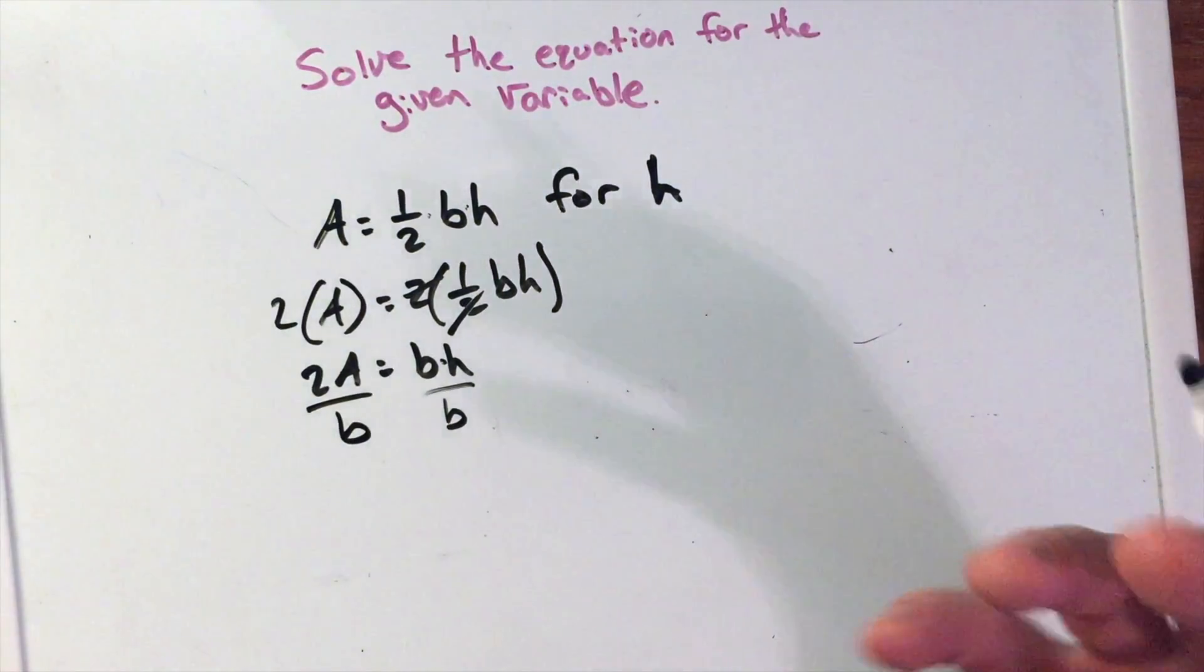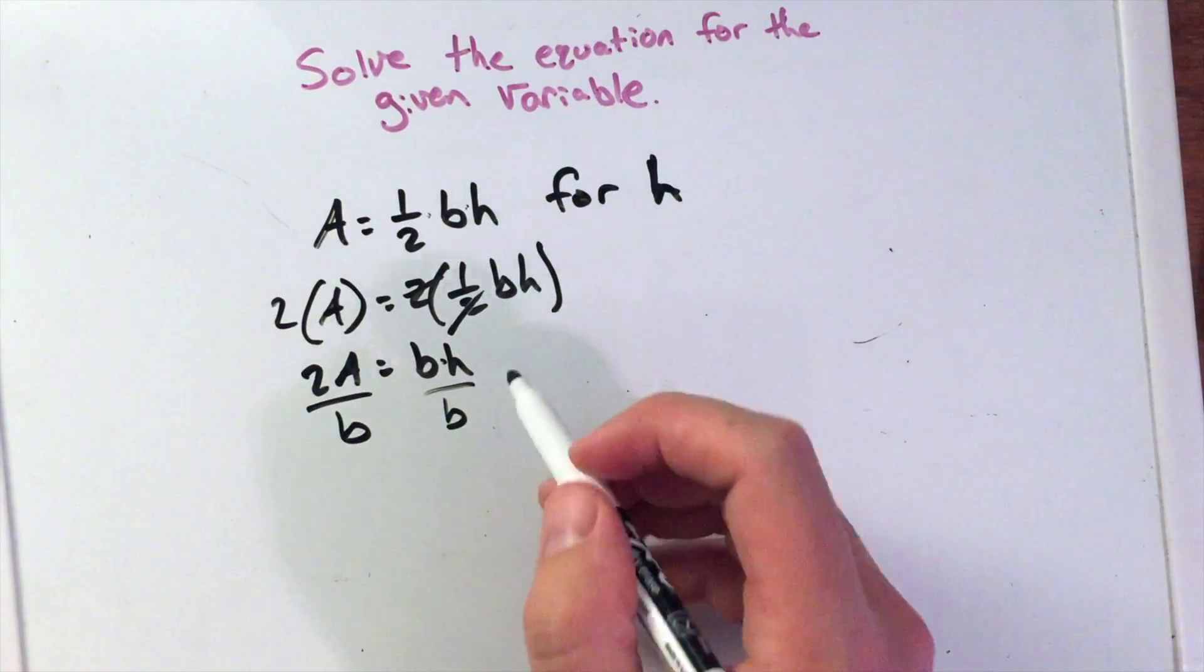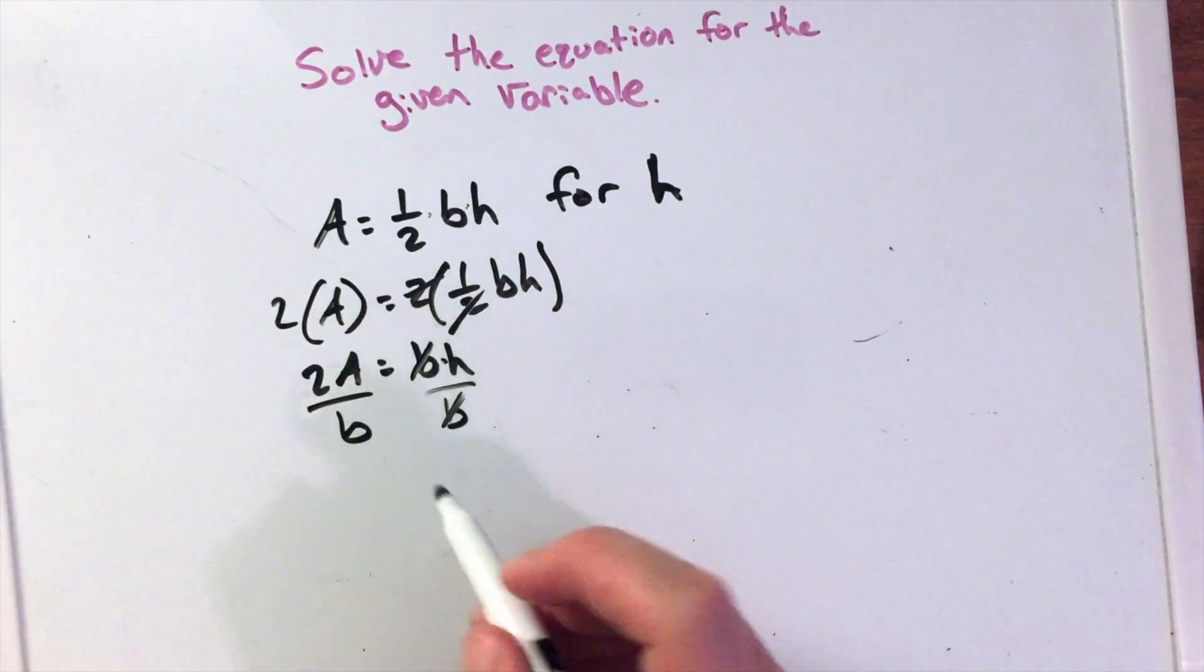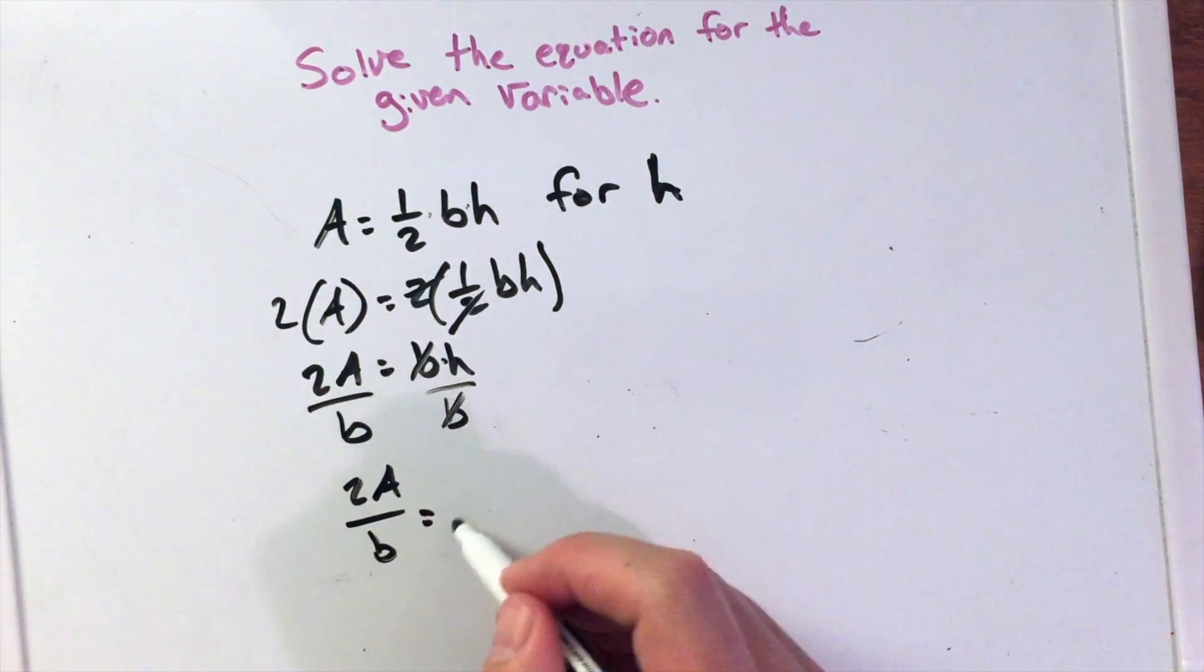Now b is just some arbitrary number. We don't know what it is right now, but it is what it is. So now we divide by b. They cancel out, and we're left with 2A over b equals h.